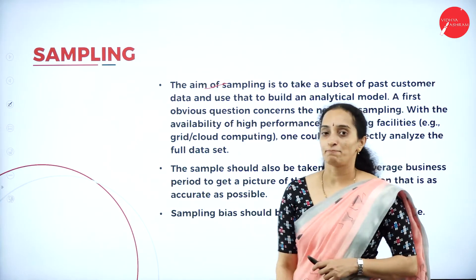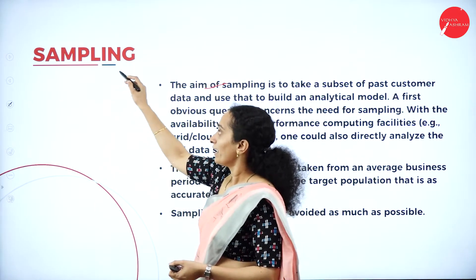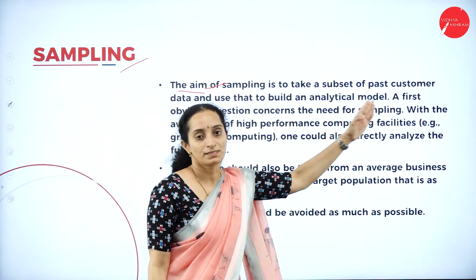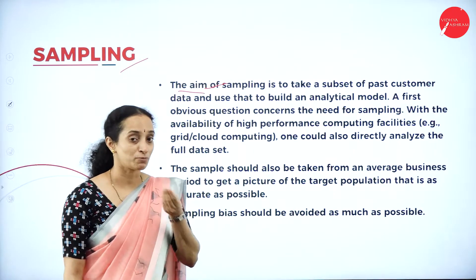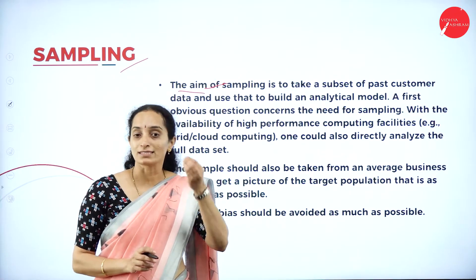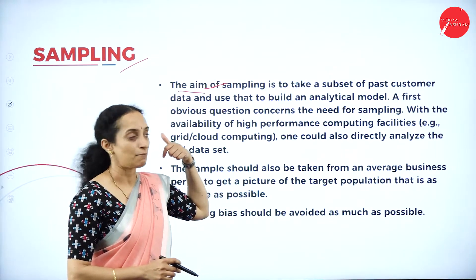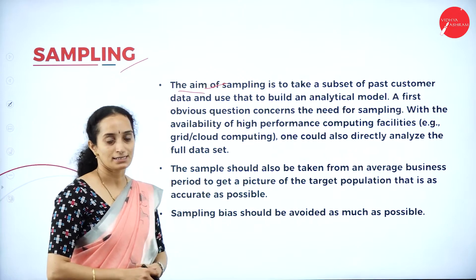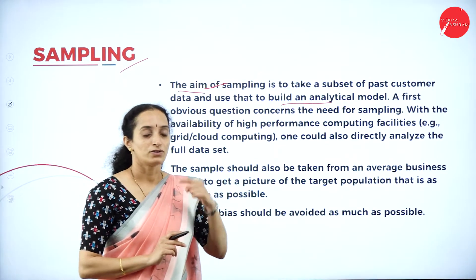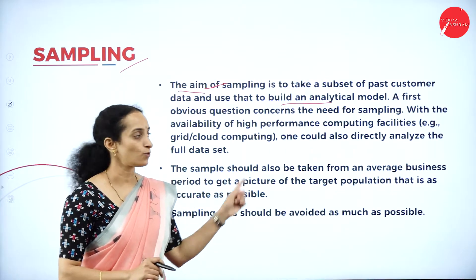The aim of sampling — what you need to do in pre-processing — first is sampling. You have to enable sampling for big data. The aim of sampling is to take a subset of past customer data. It is not the entire product, just a small amount which gives you the insight of how the product is — that is a sample. The same thing is done here: to take the subset of past customer data which is already stored and use it to build an analytical model.